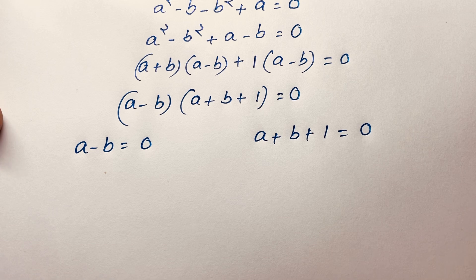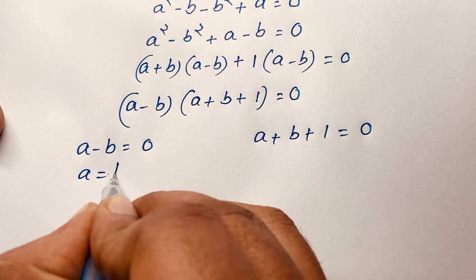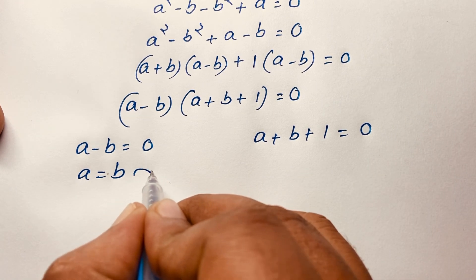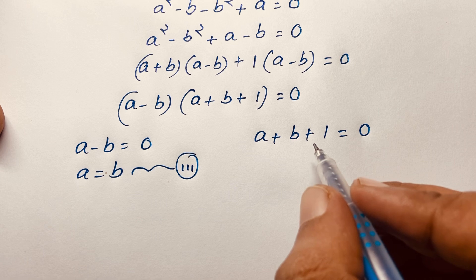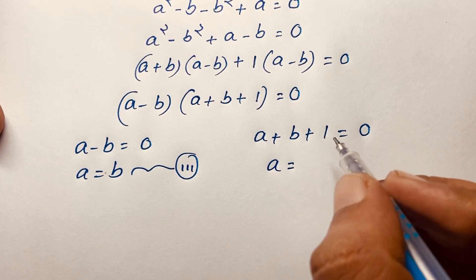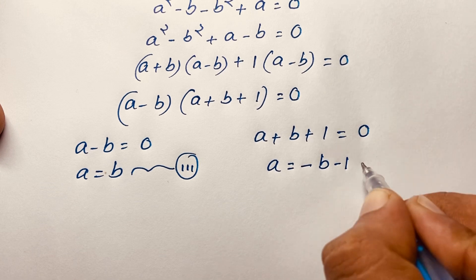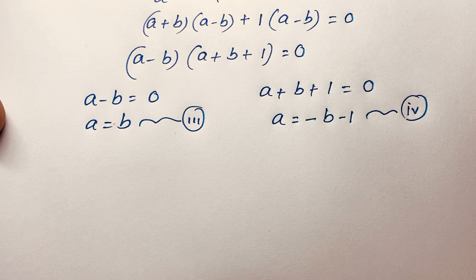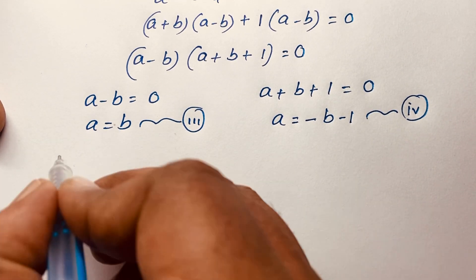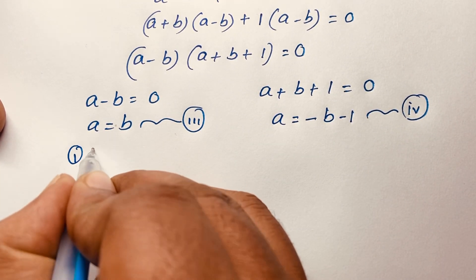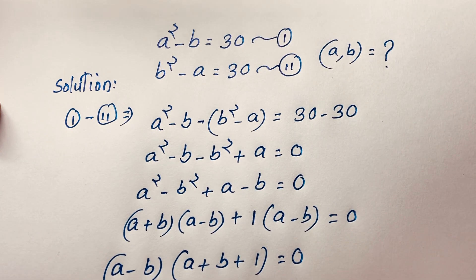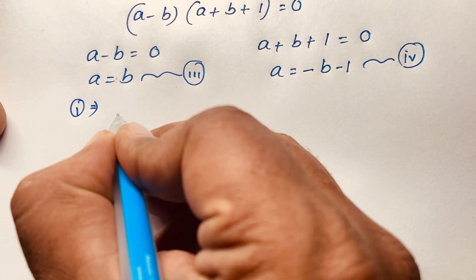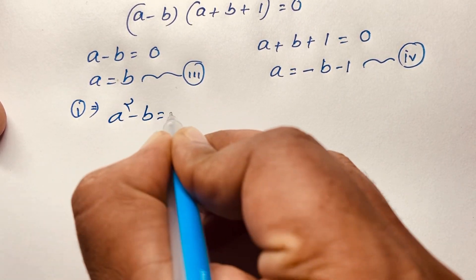I can say easily here A is equal to B. I just move B to the other side, and I can say it is our third equation. And in the other case, I can say easily it will be A is equal to negative B minus 1. This is our fourth equation. Now at this point, here A and B are equal, so I take our first equation. Recall our first equation: it will be A squared minus B is equal to 30.